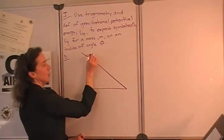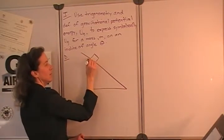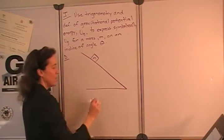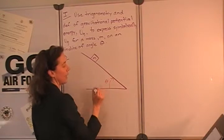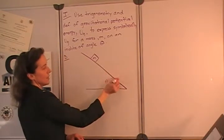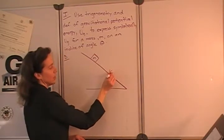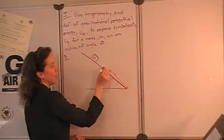So we have an incline with a mass on that incline. We know that the angle, we don't know exactly what it is, but we're calling it theta, and the mass is somewhere on the incline that's measured as a distance x along the incline.